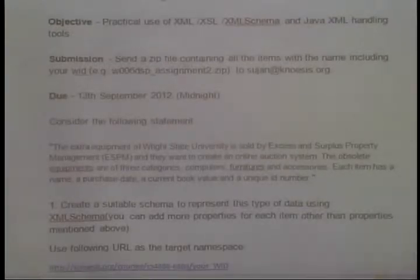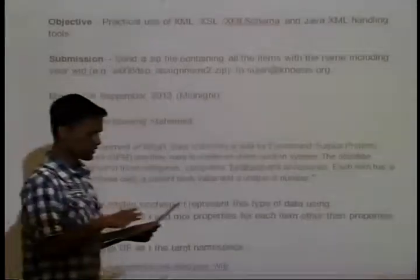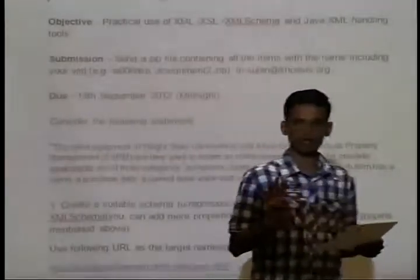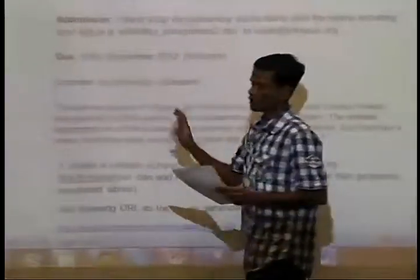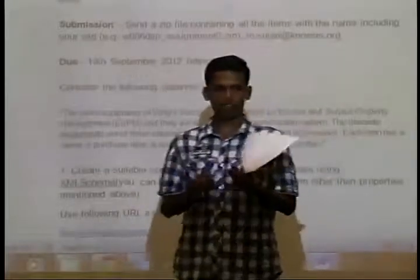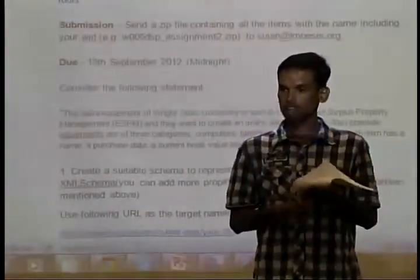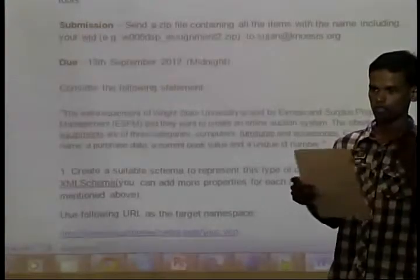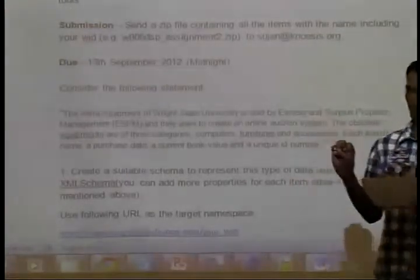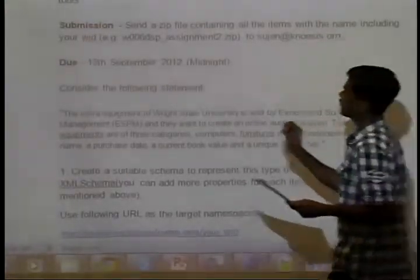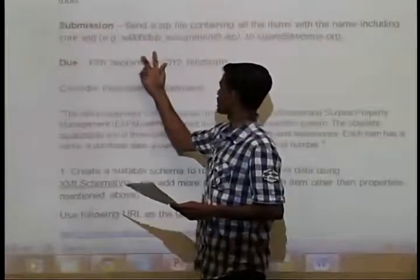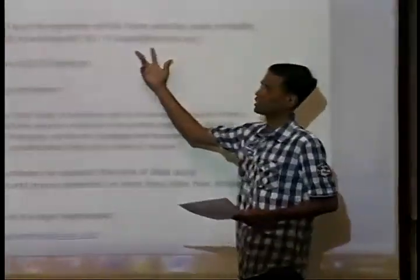Let's go through the assignment. Basically, we have to cover all the elements, all problems. This is the instruction: you need to create your XML document, XSD, XSLT, and the Java — four things. And then create a zip file and name it like your WID underscore assignment 2, and send it to me.